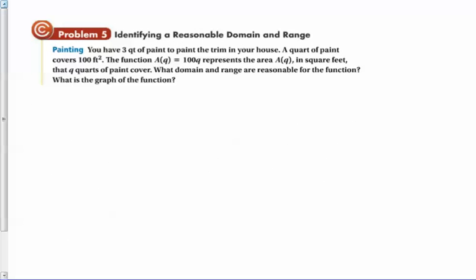Talking about reasonable domain and range for this one. You have three quarts of paint to paint the trim in your house. A quart of paint covers one hundred square feet. The function A of Q equals 100Q represents the area in square feet that quarts of paint cover. What domain and range are reasonable for the function? Now when they're talking about domain and range, they're talking about what can I plug into this thing? First off, can I, if domain is the input, that represents the number of quarts of paint that I can have. So if you think about it, the smallest value for my domain is going to be zero, right? I can't have negative quarts of paint.